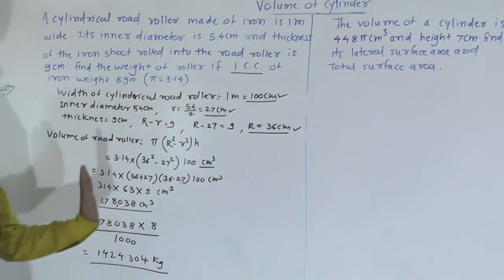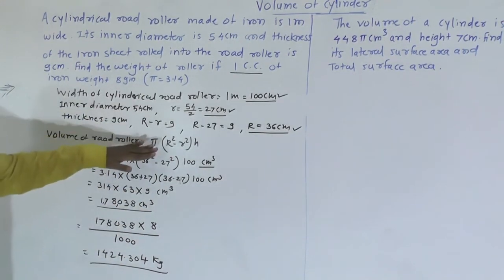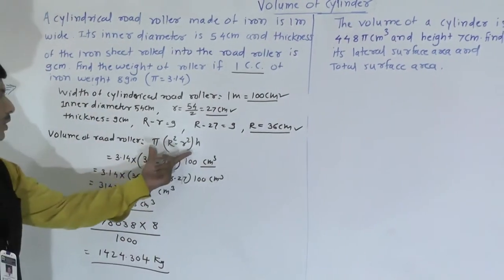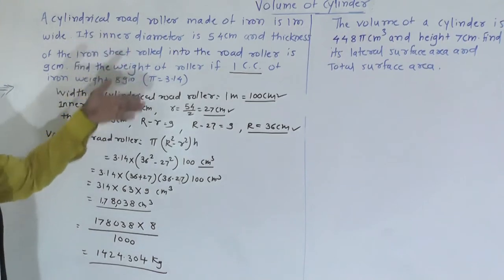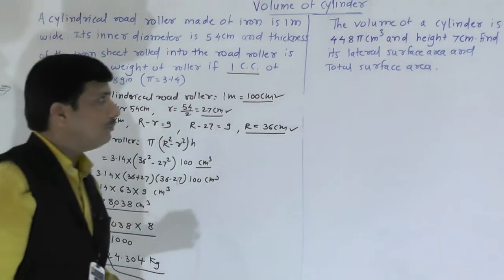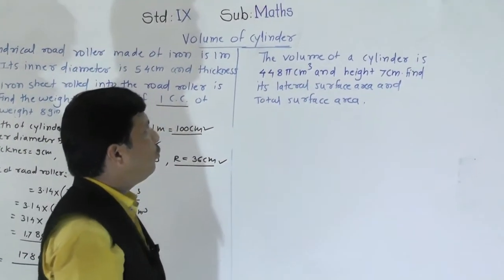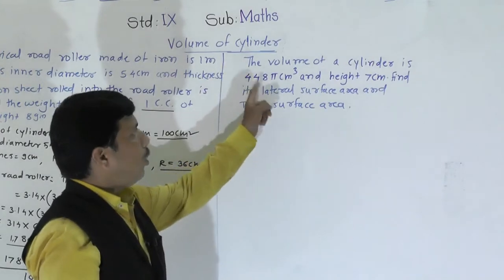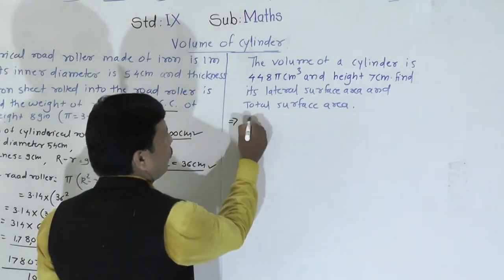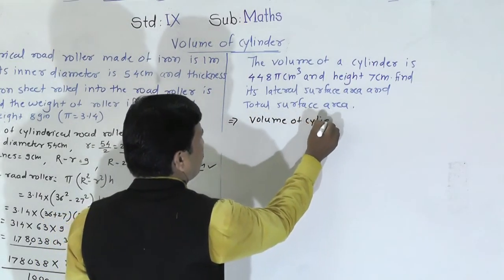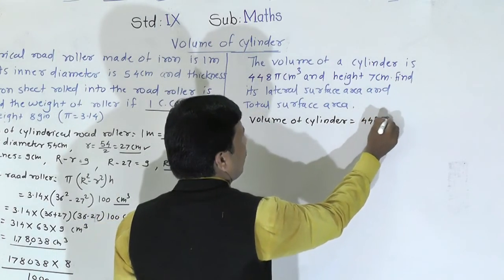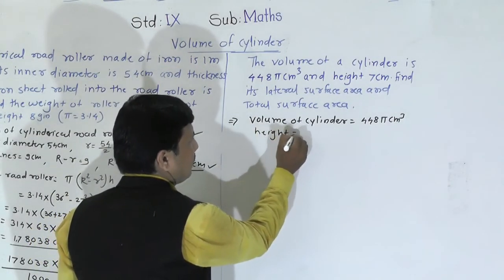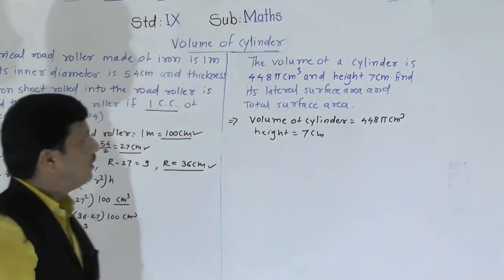Since this is a hollow cylinder, we must know both the external radius and inner radius. We find those first, then use the hollow cylinder volume formula, and multiply by the weight density as required. Now, the second problem: the volume of a cylinder is 448π cubic centimeters. This is an ordinary right circular cylinder, not hollow. The height is given as 7 centimeters. Find its lateral surface area and total surface area.